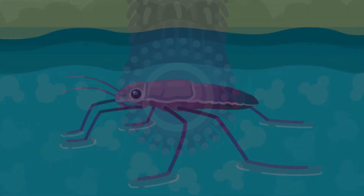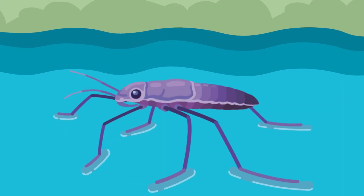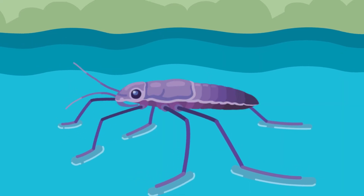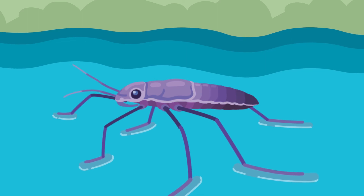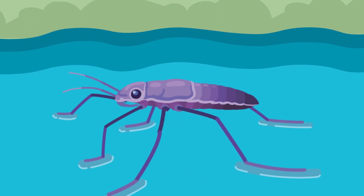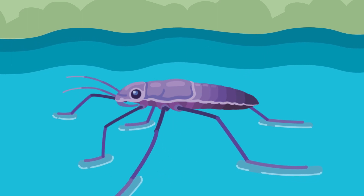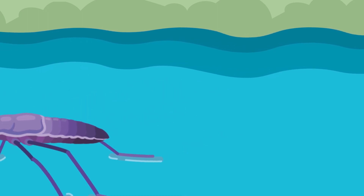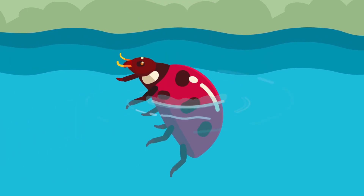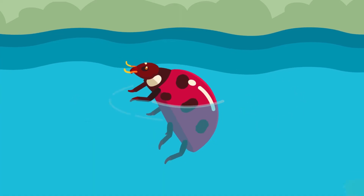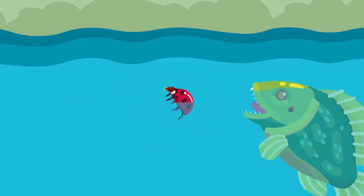The water strider's super-hydrophobic feet allow it to utilise water tension and glide across the water, where other insects sink and struggle to get back on land.